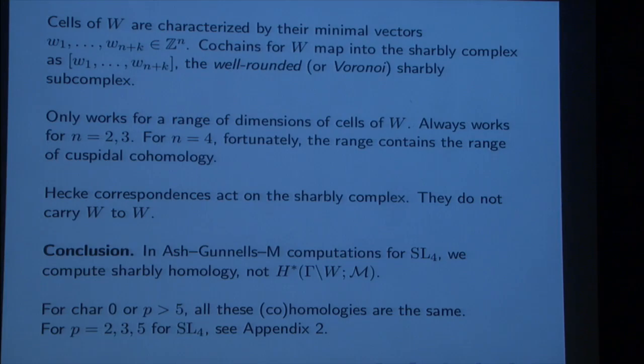We wanted to face the case where P does divide the order of the torsion. The projects I'm talking about today are mostly for SL(4,Z). For SL(4,Z), the torsion elements are of order 2, 3, and 5. So the primes we have to worry the most about are 2, 3, and 5. It becomes technical which of these things are now isomorphic to which others, and 2 is the worst, of course. I put it in Appendix 2.